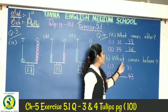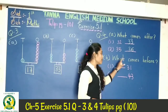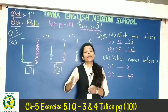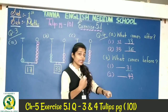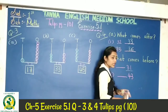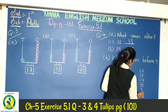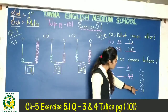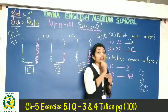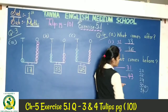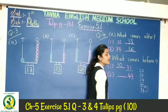Now what comes before? Here we will write the before numbers of the given numbers. For the number 31: 29, 30, 31 — the before number of 31 is 30, so we write 30 here.